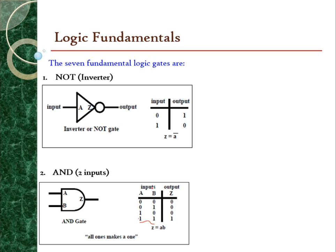In a real-world example, it might be two switches as the inputs and a light bulb as the output. You have two switches — the first switch and the second switch — connected to a light bulb. To turn on the light bulb, both switches must be turned on because they are connected in series. In combinatorial logic, the state of the output is decided immediately — as soon as both inputs are on, the light bulb will turn on.